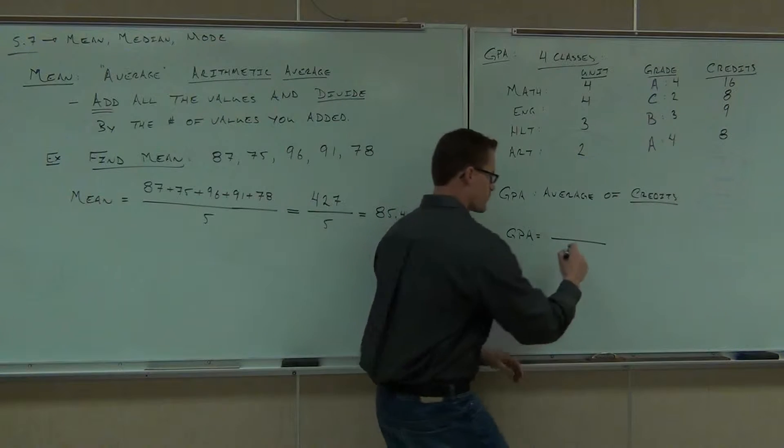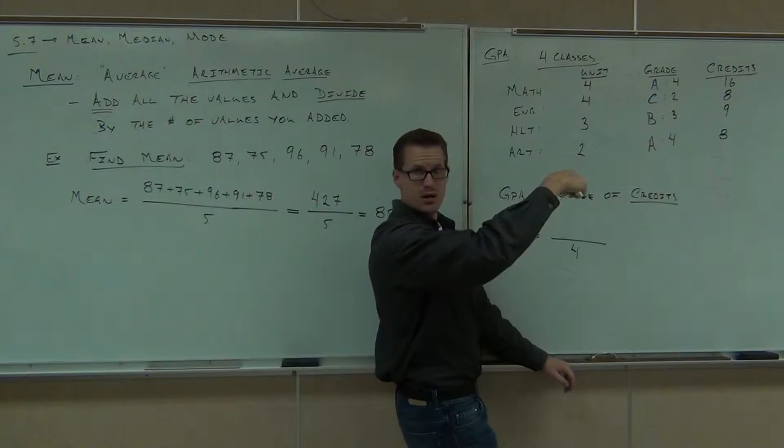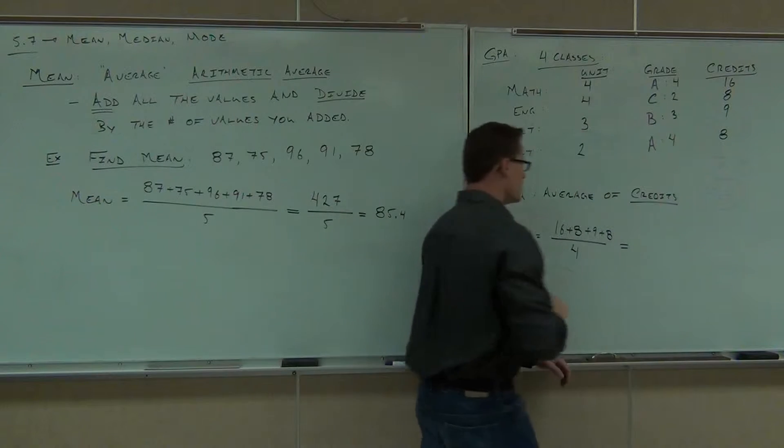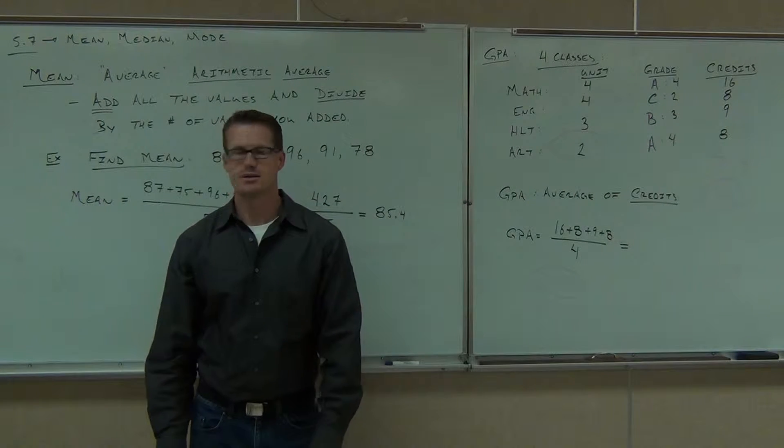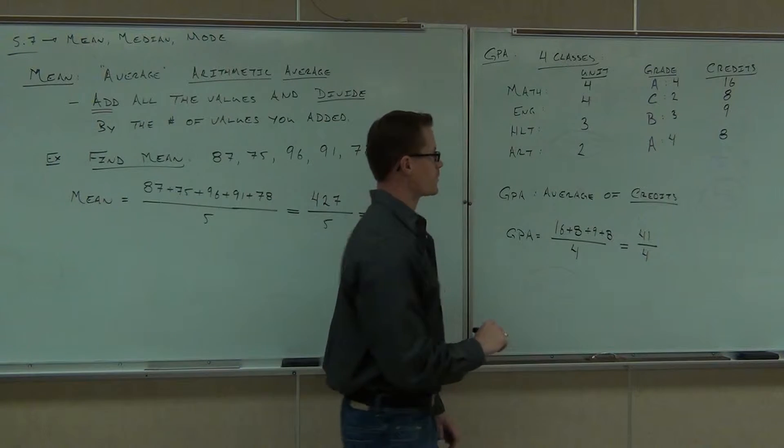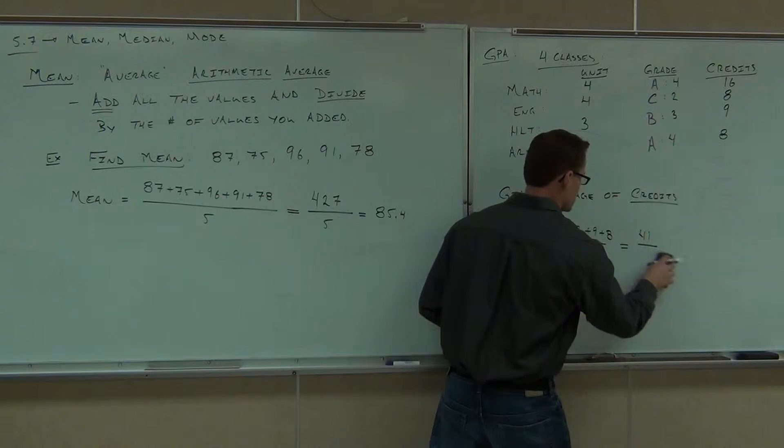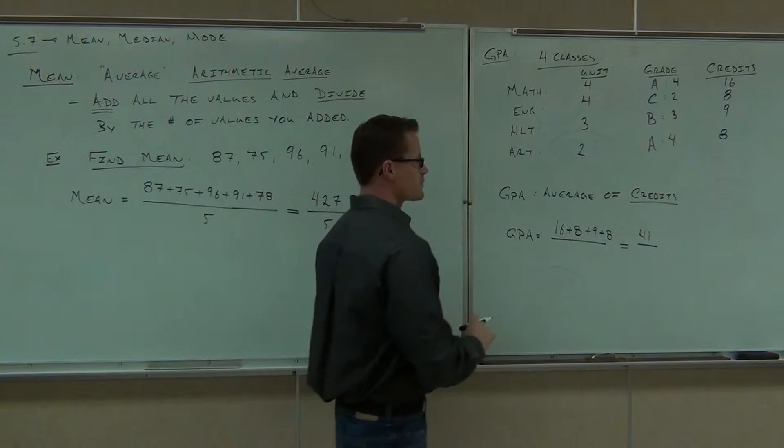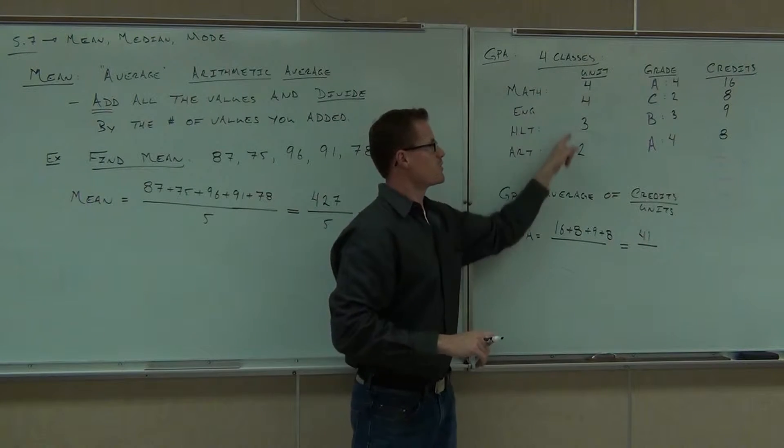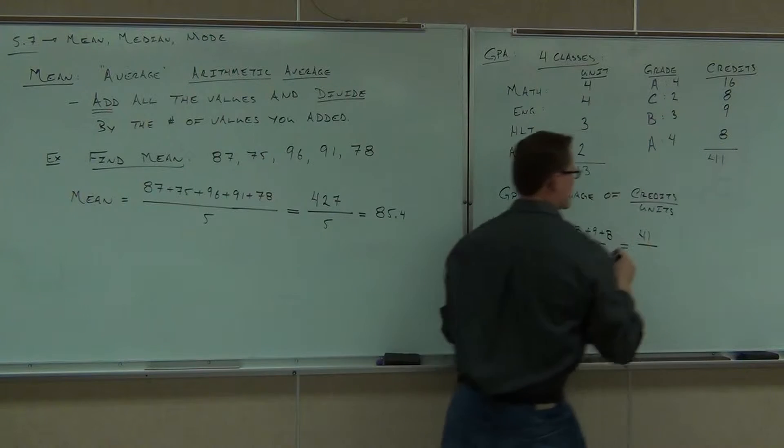So what are we going to divide by? Four. We're dividing by four. What are you adding up here? The four, four, three, and two? Yeah, because they're dependent on the unit. So it's 16, 8, 9, 8. Can you do 16 plus 8 plus 9 plus 8 for me, please? 41.